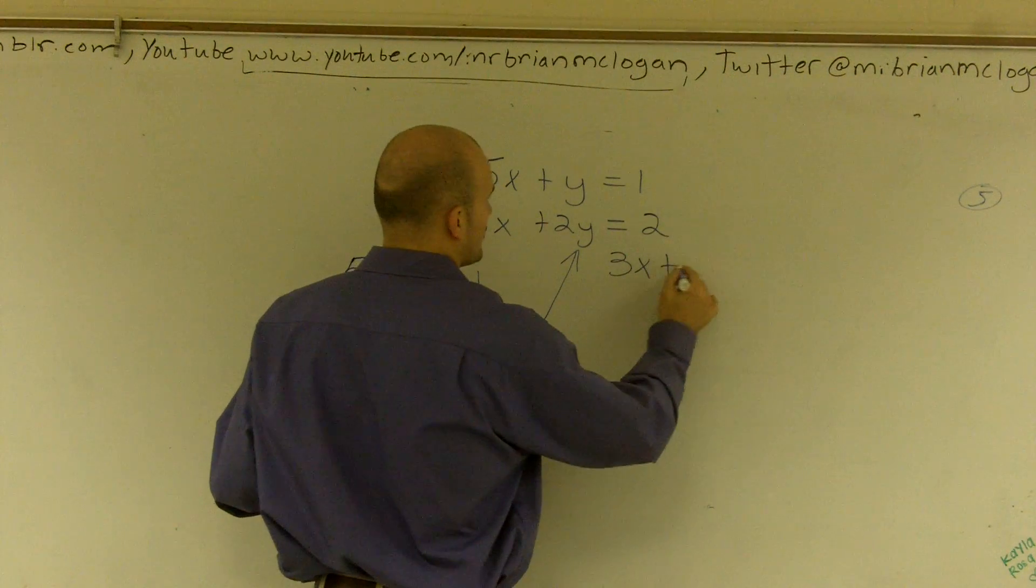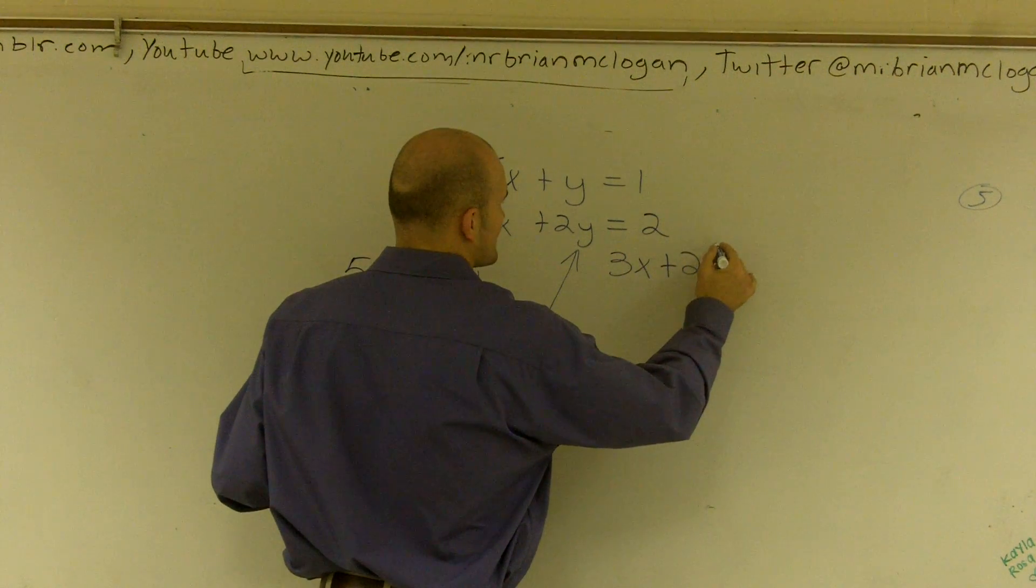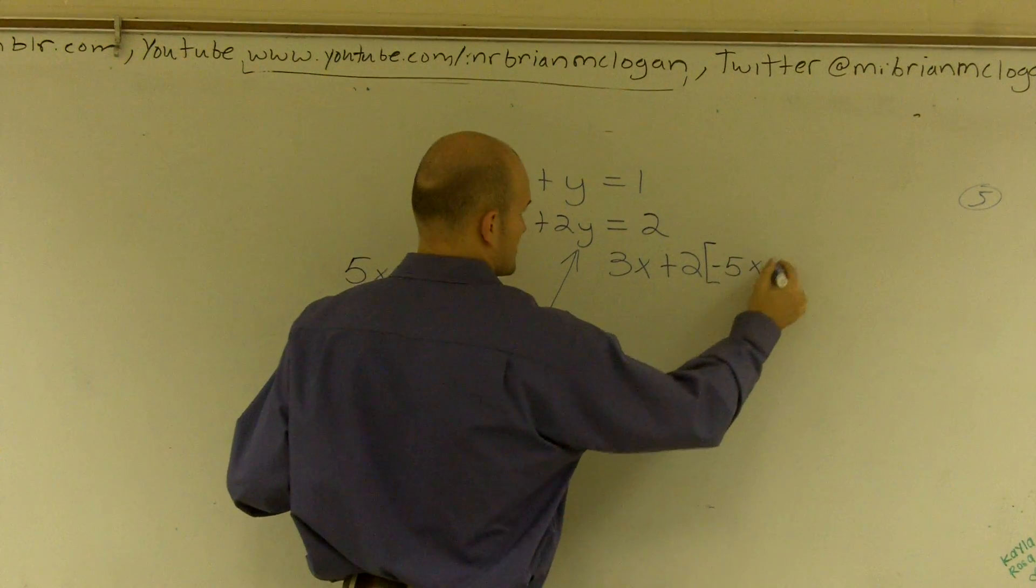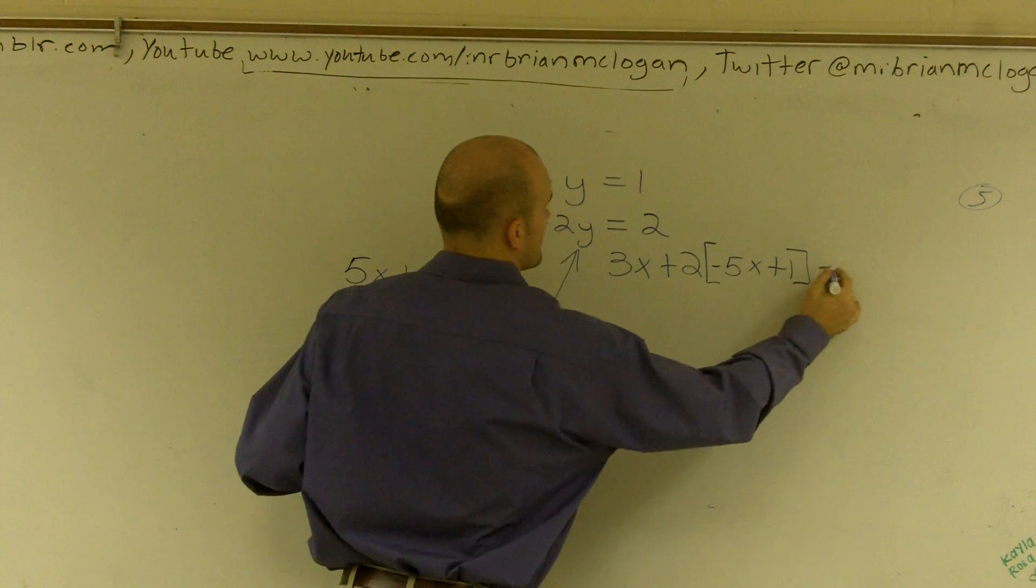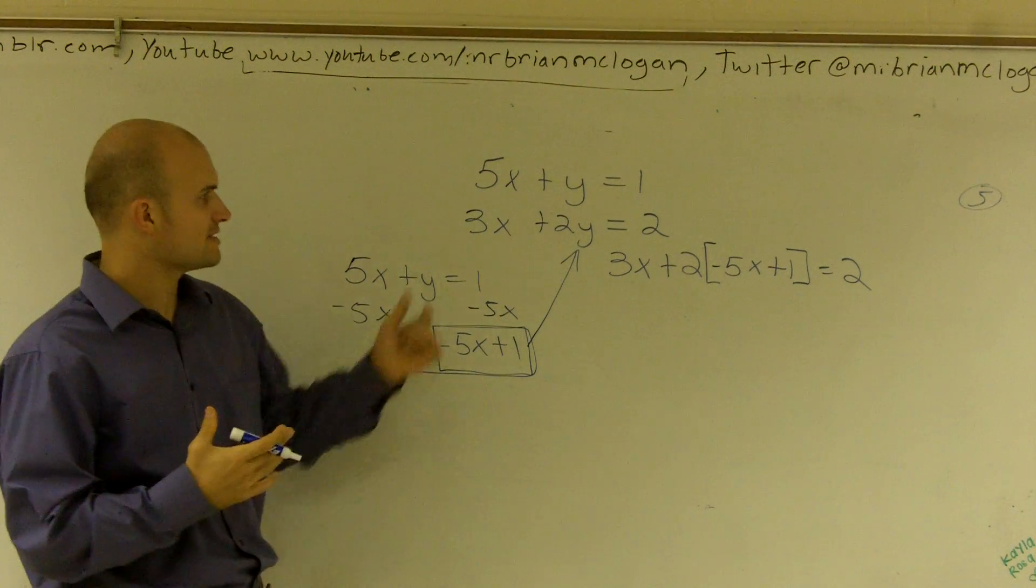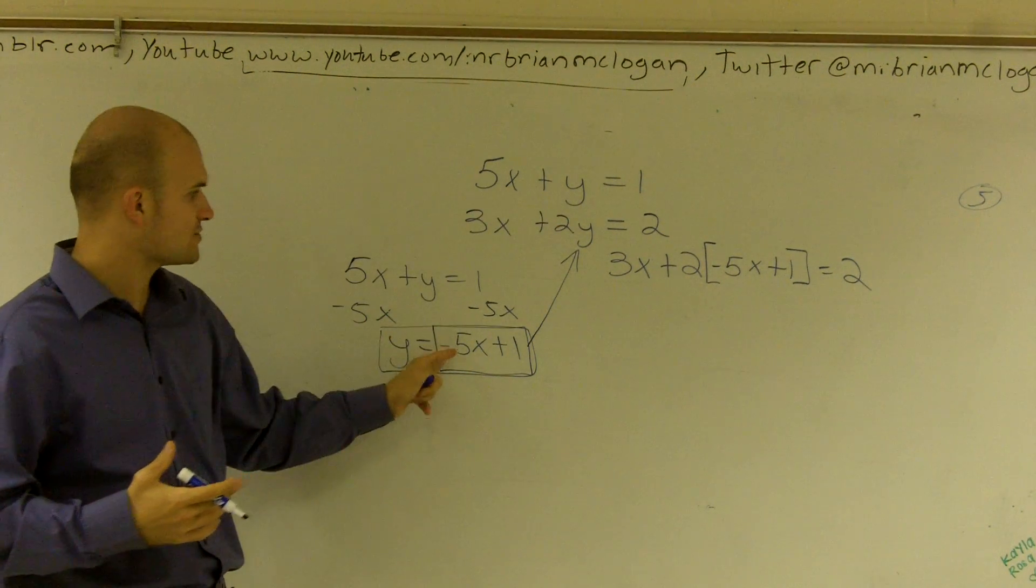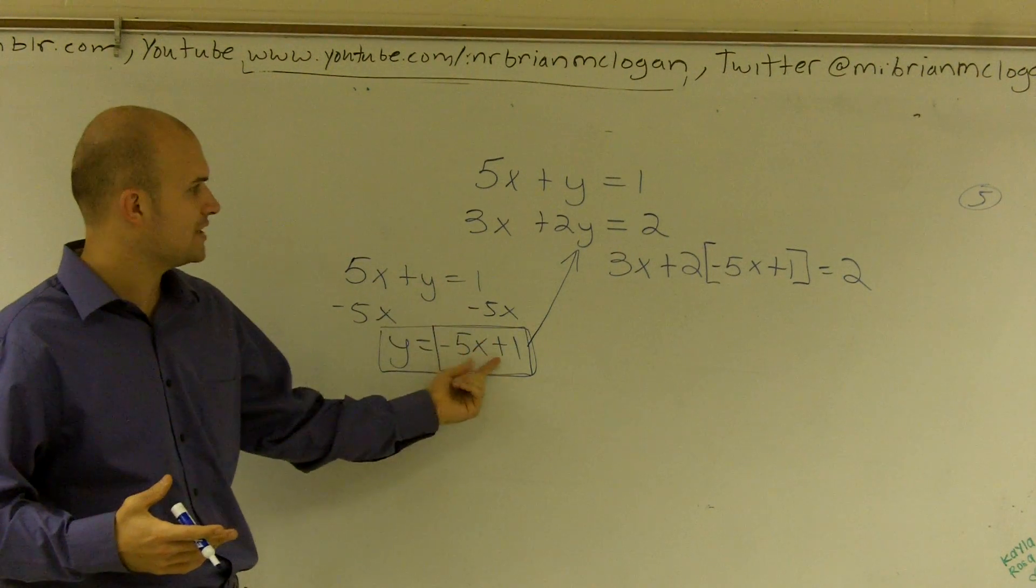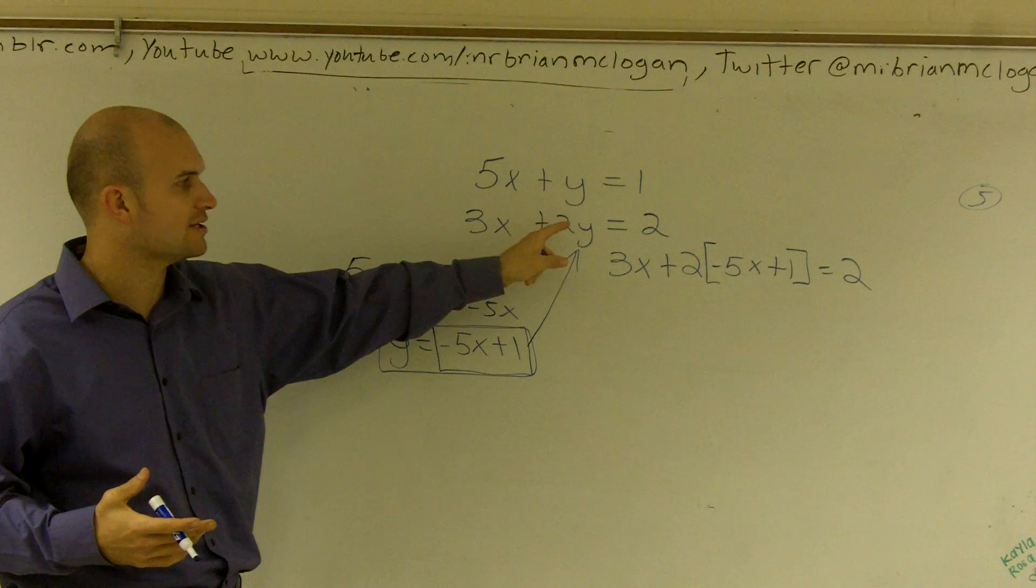So I write 3x plus 2, not times y, but times negative 5x plus 1. So if you look at this, I found the value of y, which is negative 5x plus 1, per the first equation. Then I take that value and I plug it in for y of the second equation.